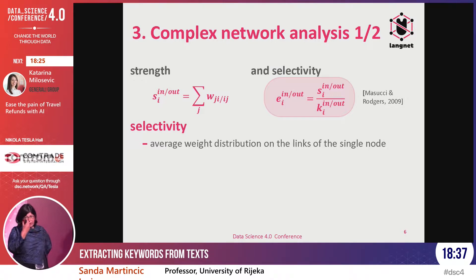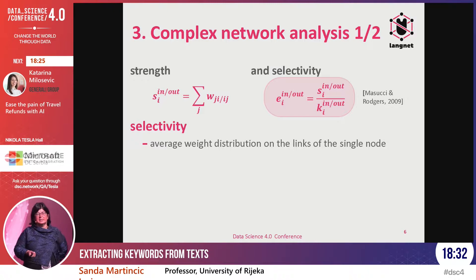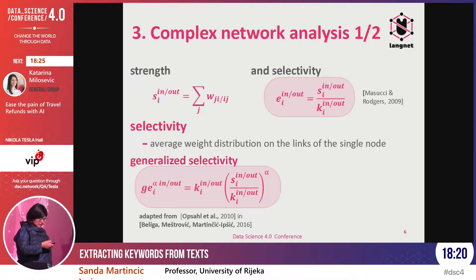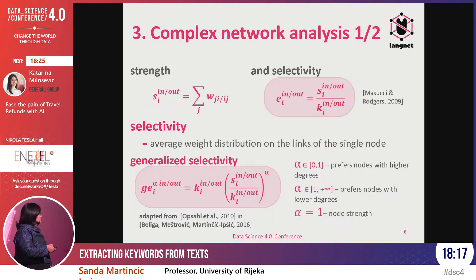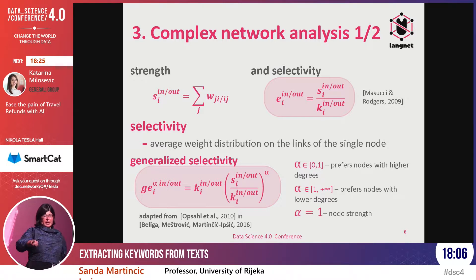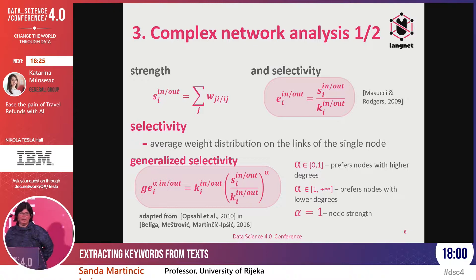Selectivity, for those familiar with complex networks analysis, is the average-weighted strength of the node. Besides selectivity, we also developed and proposed a generalized selectivity with one alpha parameter. With this alpha parameter, we can tune whether we are preferring or ranking higher nodes with high degree or with lower degree, which can help us tune the method to the data.